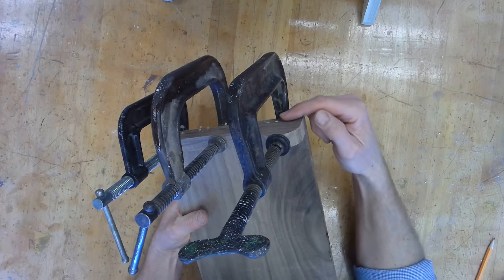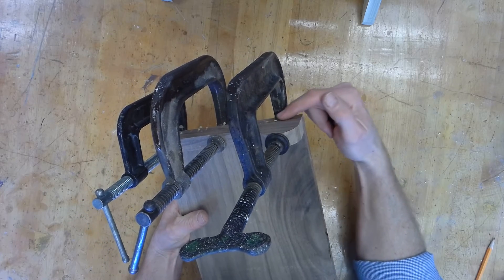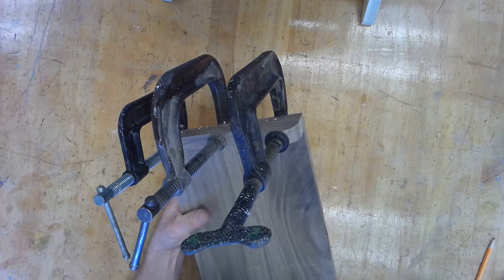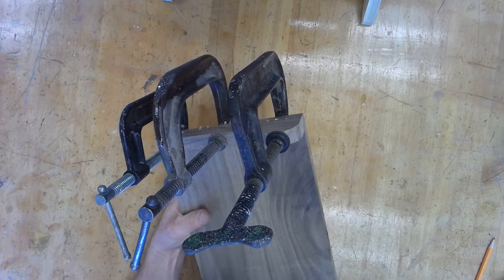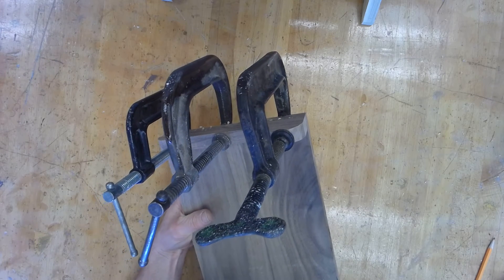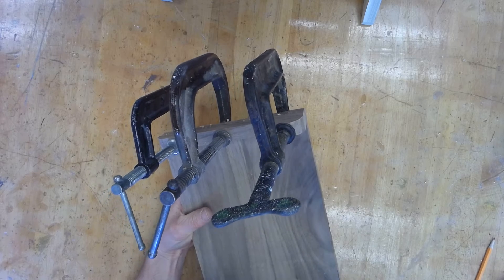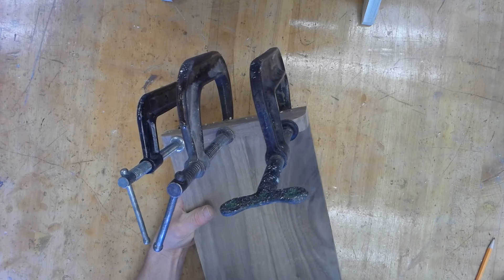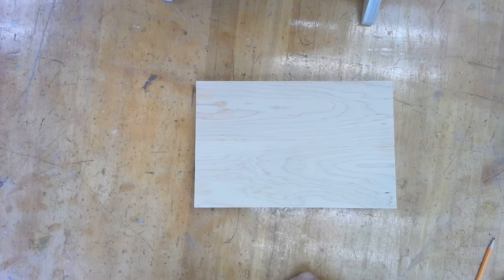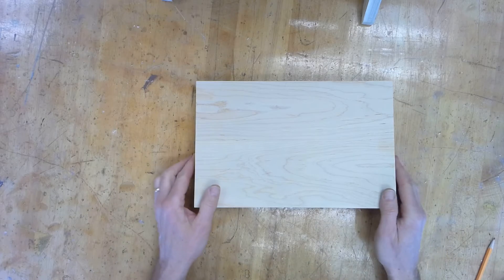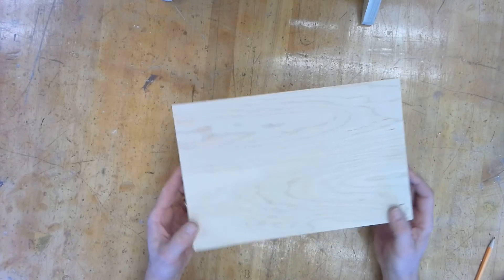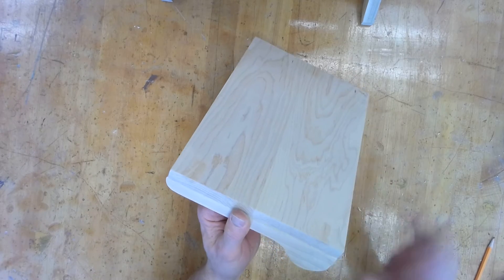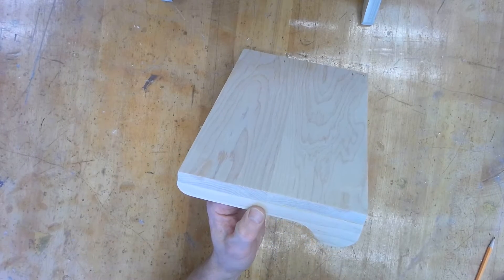Now, here you can see we've got some squeeze out with the glue. So our next step, after the glue dries for a day, you're going to take the clamps off and we need to do some sanding.